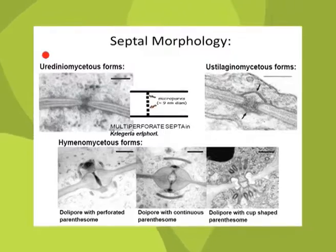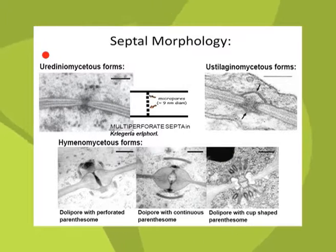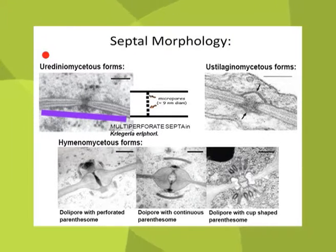The basic characteristic features of basidiomycetous yeasts: septal characteristics have been used as the primary phylogenetic feature for discrimination of taxa within Basidiomycota. In one group, Urediniomycetes, the septal pore is simple and large, but the wall of the septa is attenuated towards the central pore.